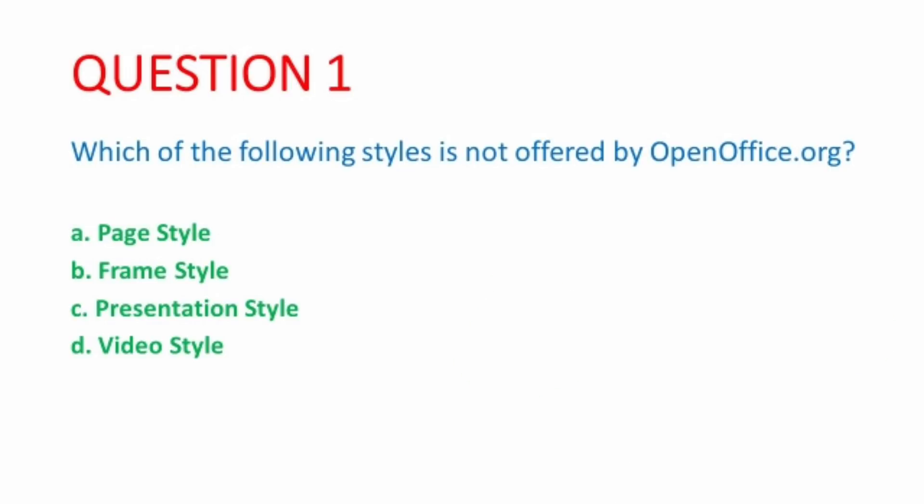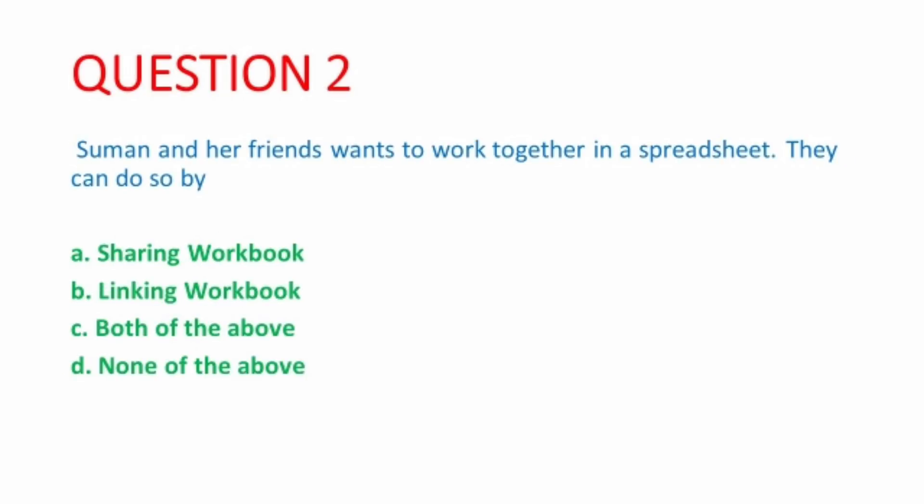This is the question from the unit Digital Documentation Advanced. So if you have studied this unit then different types of styles are given: Page style, paragraph style, character style, frame style, number style, cell style, graphic style and presentation style. So if you have seen the options then you will know that video style is not offered by OpenOffice.org. Style is a very important topic from this unit. You should know what is style, what are the types of styles and how to apply style in your document.